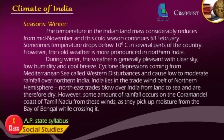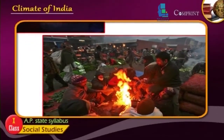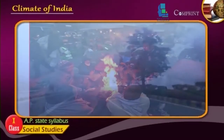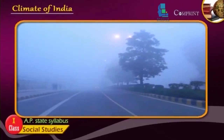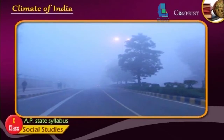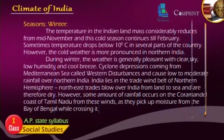This cooling effect of the easterly jet streams causes rain from clouds already found over latitude 25 degrees north. The temperature in the Indian landmass considerably reduces from mid-November, and this cold season continues till February. Sometimes temperature drops below 10 degrees Celsius in several parts of the country. However, the cold weather is more pronounced in northern India. During winter, the weather is generally pleasant with clear sky, low humidity, and cool breeze. Cyclonic depressions coming from the Mediterranean Sea, called western disturbances, cause low to moderate rainfall over northern India.